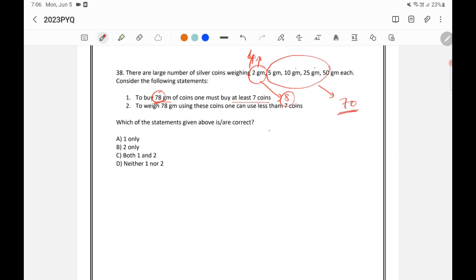Now for 70, how can I make? I can use 1 fifty coin. Then if I take 1 twenty-five coin, it's going to be 75, so I'm not going to take 25 coin. Then I can take 2 ten gram coins, 10 and 10, then it will become 70. That is the minimum possibility. So here 3 coins I have used and 4 coins I have used here, so total it is 7 coins. So at least 7 coins is required. So this statement is correct.